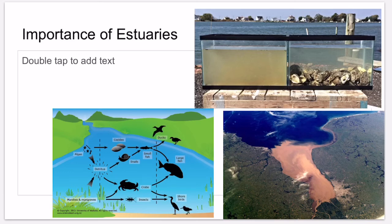Estuaries also control erosion and flooding. Their sandbars can buffer waves. Plants and shellfish beds anchor the shore against the tides. Swamps and marshes absorb high winds and water from heavy rains and storm surge, and gradually release this water into rivers and groundwater supplies.